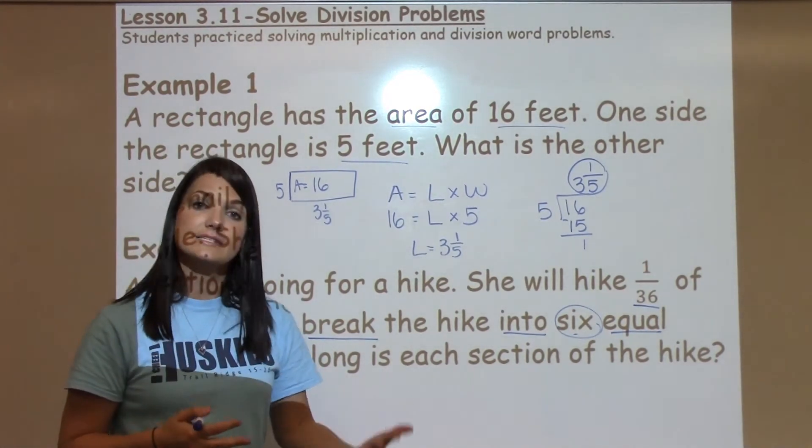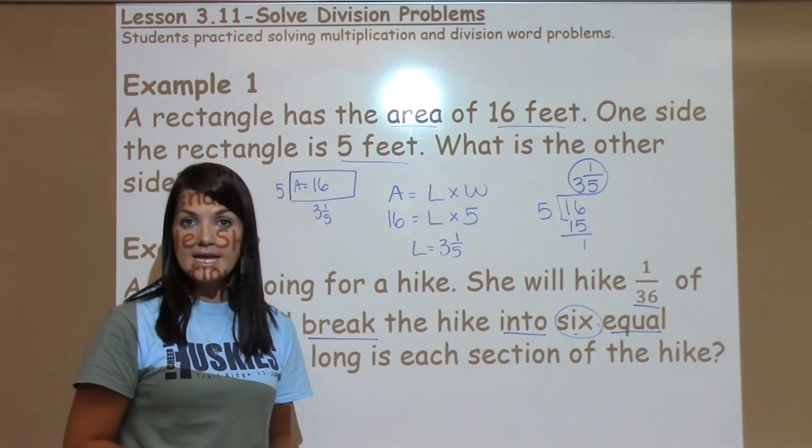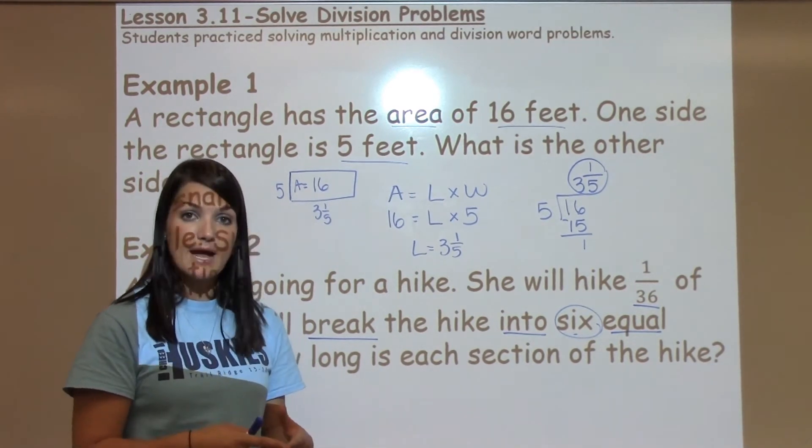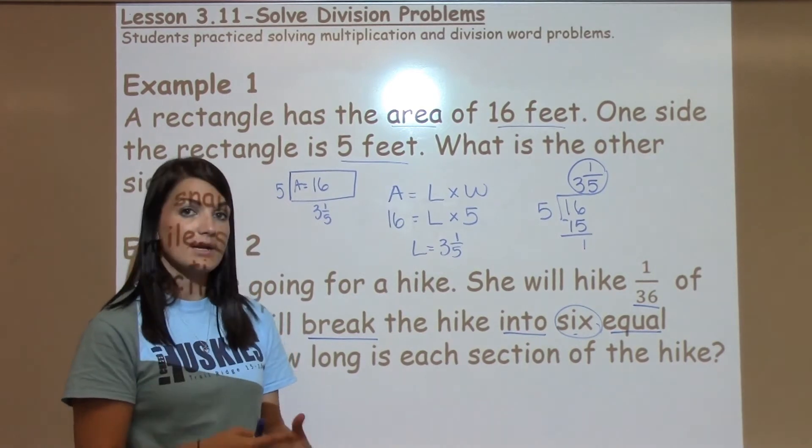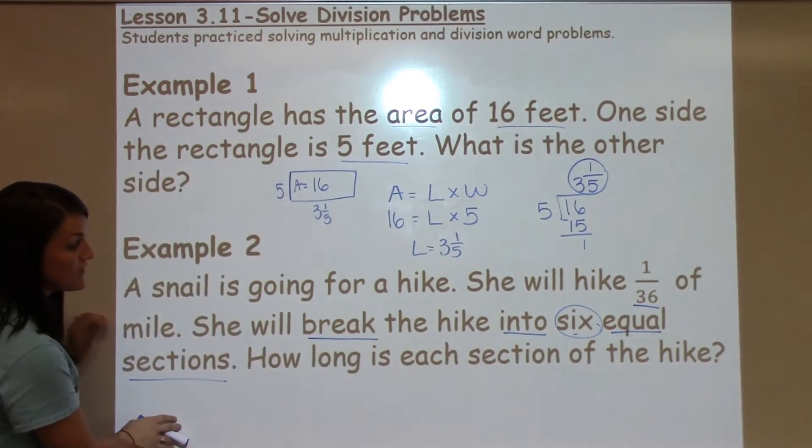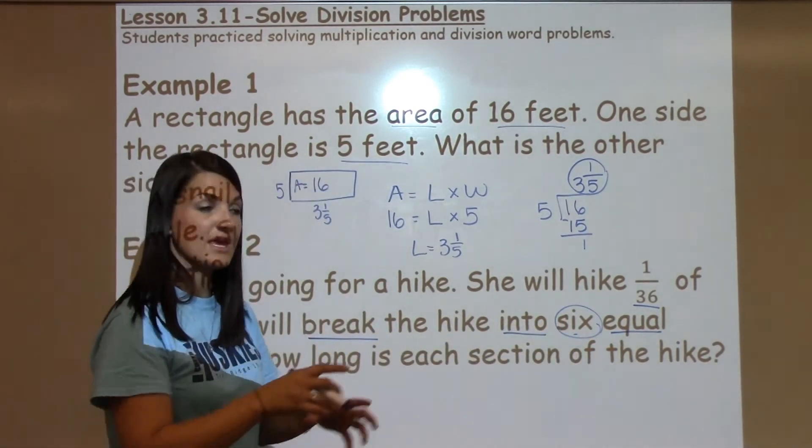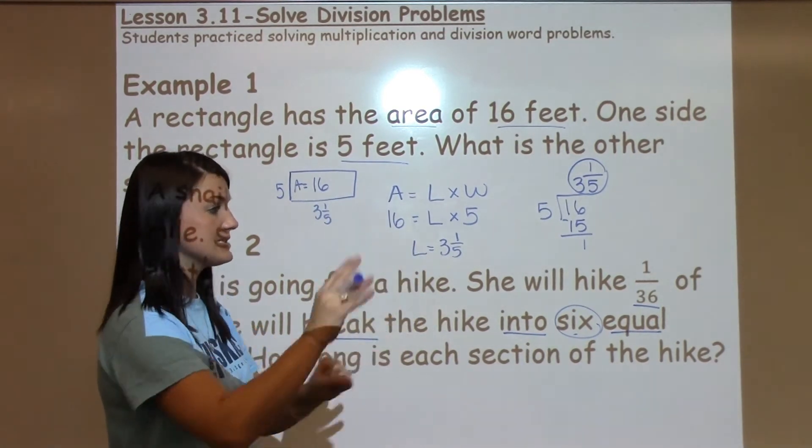Lots of times just like in addition and subtraction, we look for key words that tell us to do that. For addition: altogether, put together, combine. Subtraction: take apart, or what's the difference? These are key words for division. Break into equal sections. That tells me I'm taking what I have, putting it into sections.